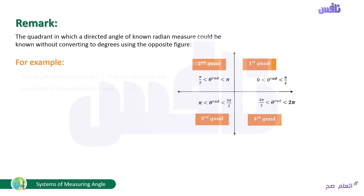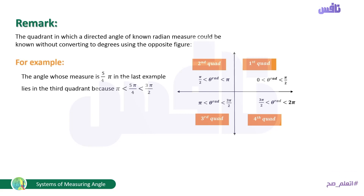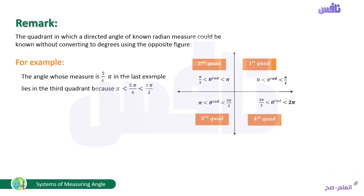Applying this remark to the previous example: the angle 5π/4 — converting to a mixed number gives 1¼π, which is bigger than π and smaller than 3π/2. Therefore, the angle lies in the third quadrant, confirming the earlier result.